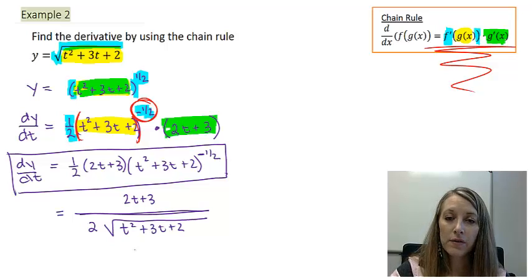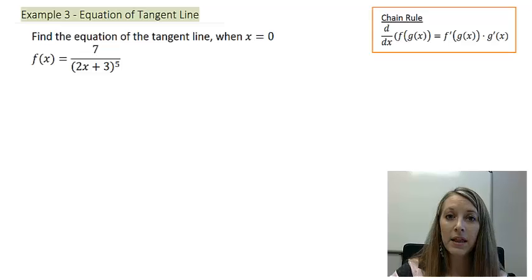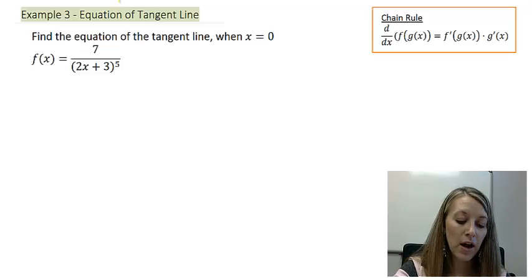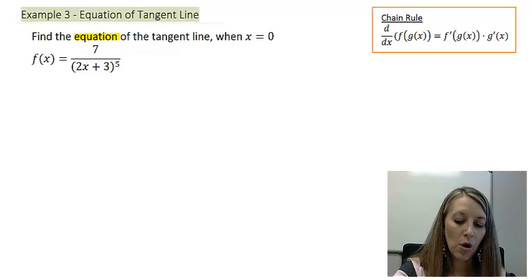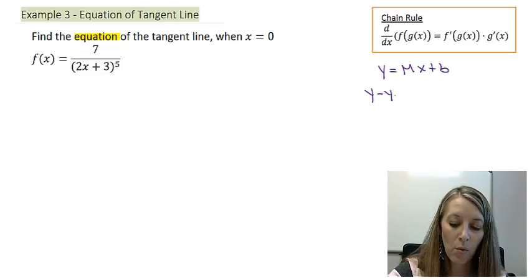Now you've seen another example of using the chain rule. Let's do another example. In this one, we want to find the equation of the tangent line. We can use either y equals mx plus b, or I prefer y minus y₁ equals m times x minus x₁.